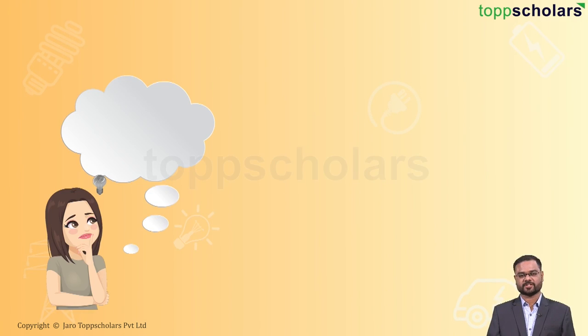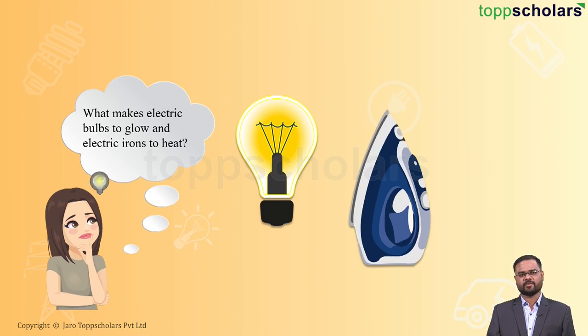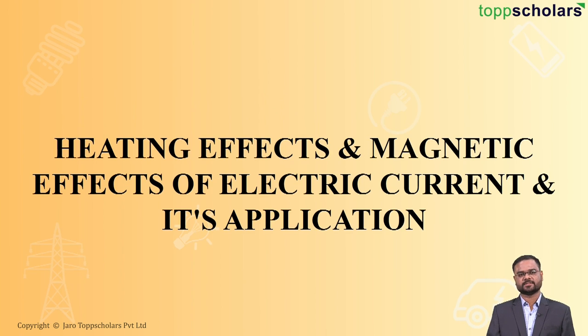Hello students, welcome to Top Scholars. Today we are going to learn an important topic and this topic will give you a lot of questions. Have you wondered why an electric bulb glows or an electric iron gets heated? Is there any fire involved? What we are going to learn is the heating effect and magnetic effect of electric current and its applications.